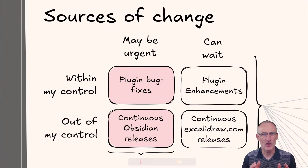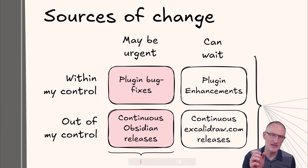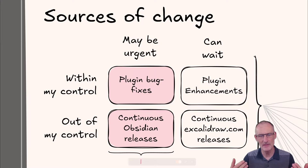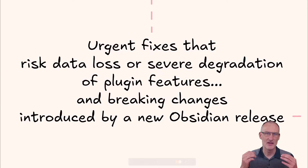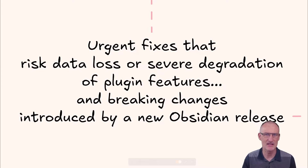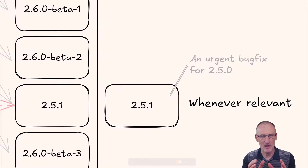There are various sources of changes: some are in my control and some are outside my control. Sometimes urgent bug fixes — whether from outside factors or within my control — can drive a situation where I need to deploy fixes quickly. These are typically fixes that may lead to data loss, severe degradation of plugin features, or breaking changes introduced by a new Obsidian release.